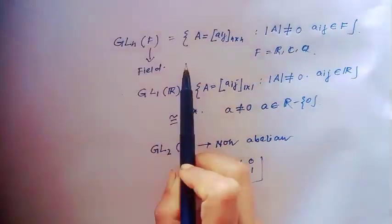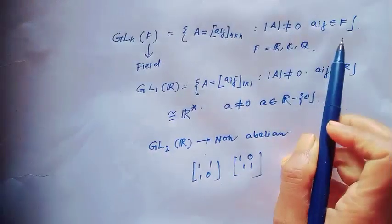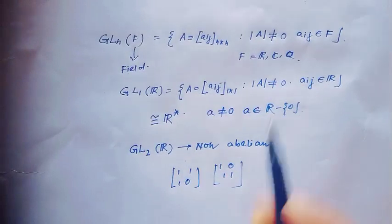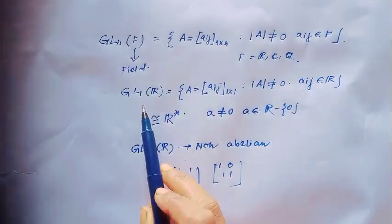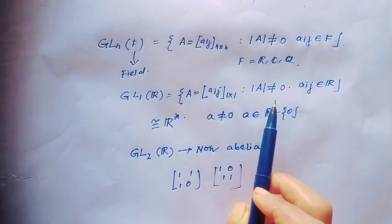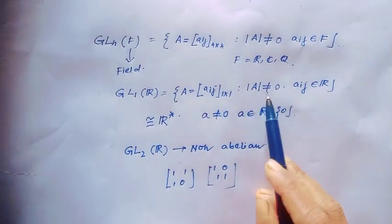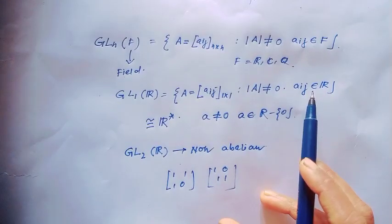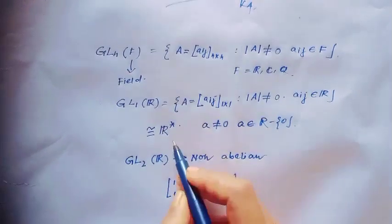Now consider one nice group related to Un: the group GL(n, F), defined as the set of n×n matrices A with entries aij such that the determinant of A is not equal to 0, where the entries belong to a field F such as R, C, or the rationals. If we consider GL(1, R), this equals the set of 1×1 matrices with nonzero determinant and real entries, which is isomorphic to R star.